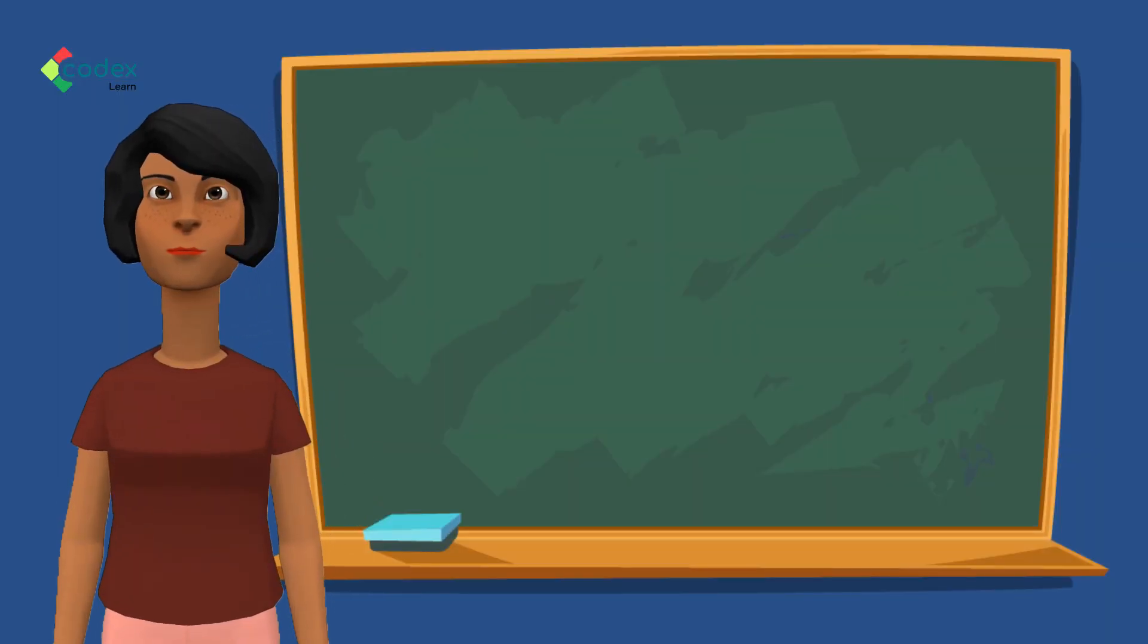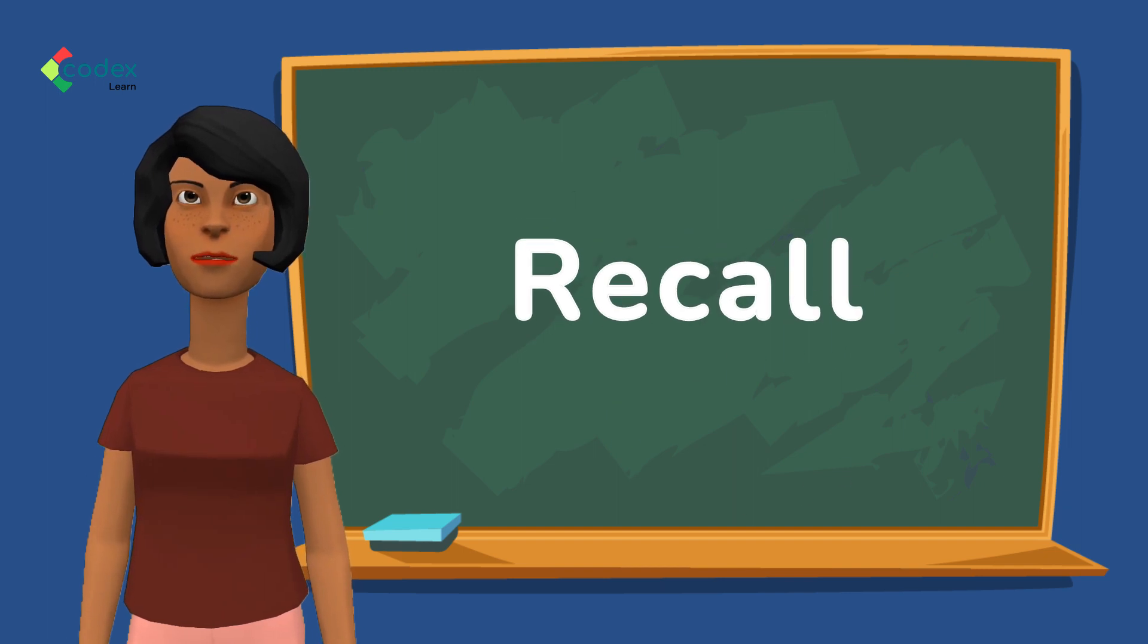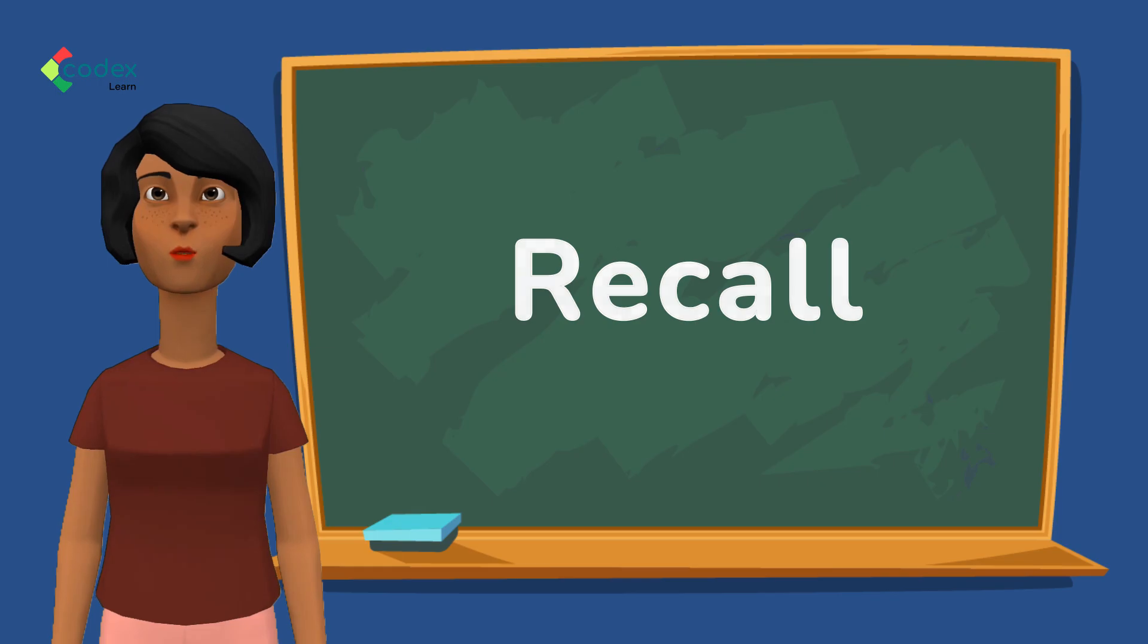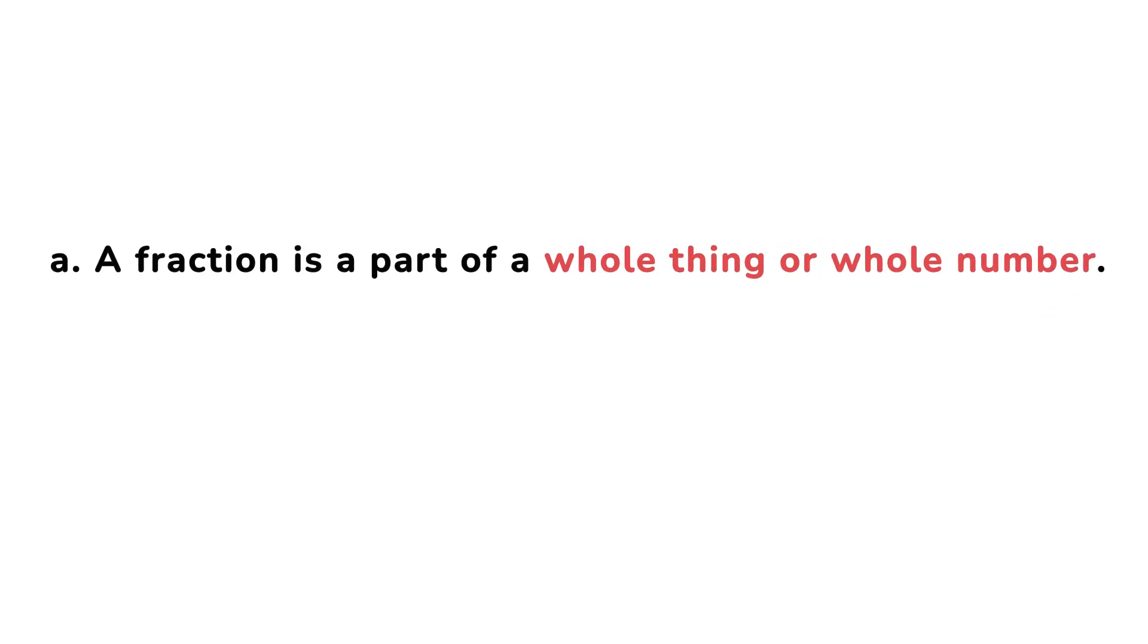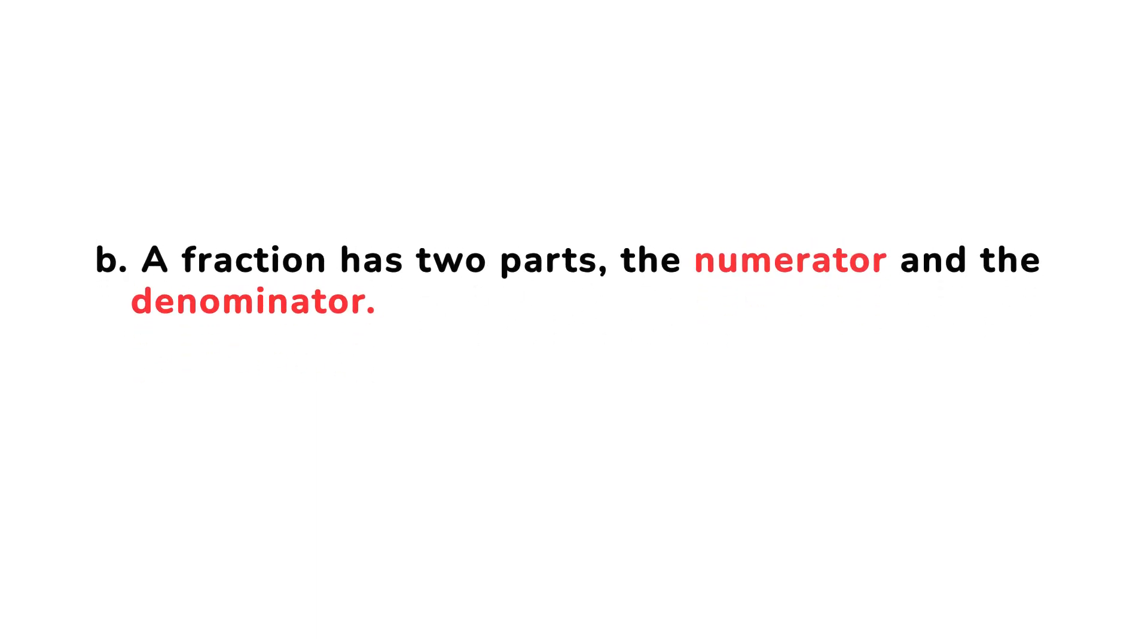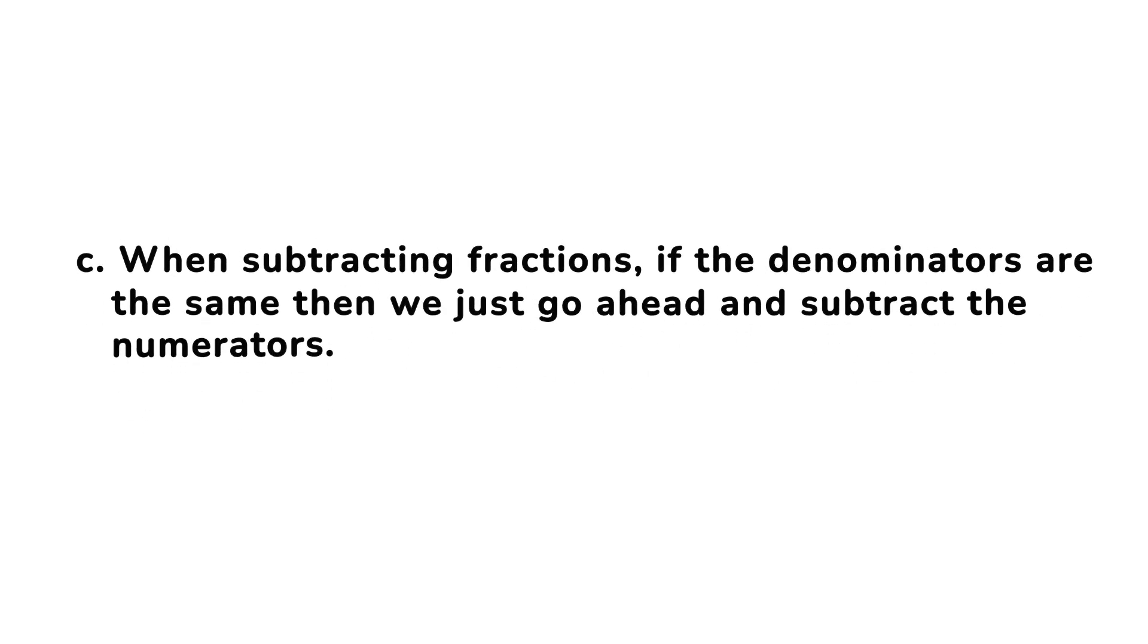Now let us remind ourselves some important things we learned in this lesson. We learned that: A) A fraction is a part of the whole thing or whole number. B) A fraction has two parts, the numerator and the denominator. C) When subtracting fractions, if the denominators are the same, then we just go ahead and subtract the numerators.